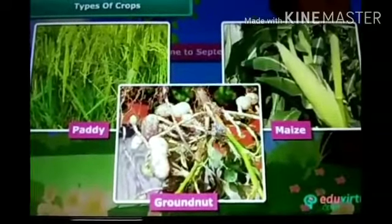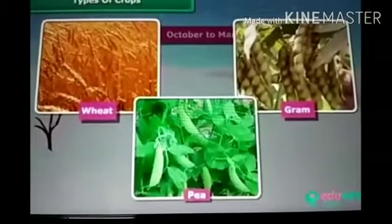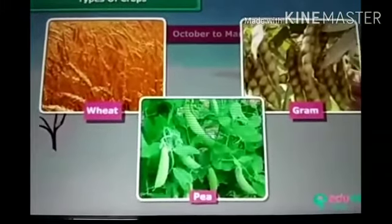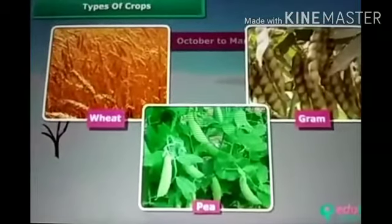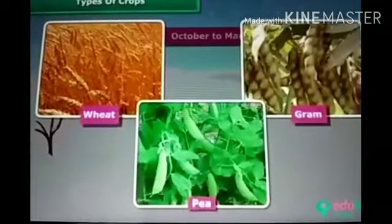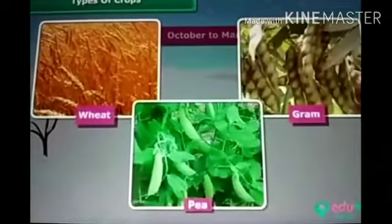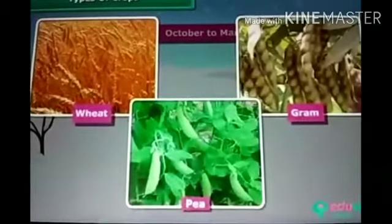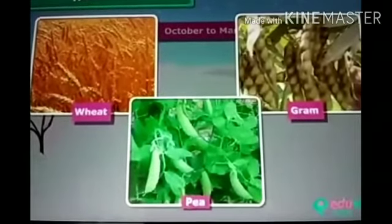The other type is Rabi crops — crops grown in winter season from October to March. Examples include wheat, gram and pea. Pulses and vegetables are also grown during the winter season. Some pulses and vegetables are also grown during summer at many places.